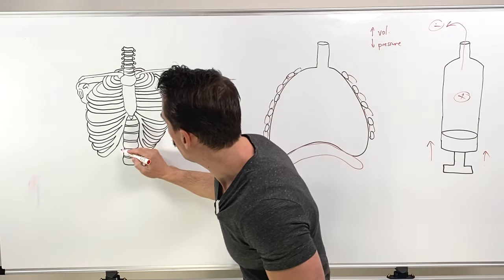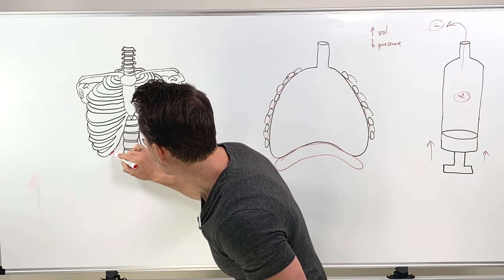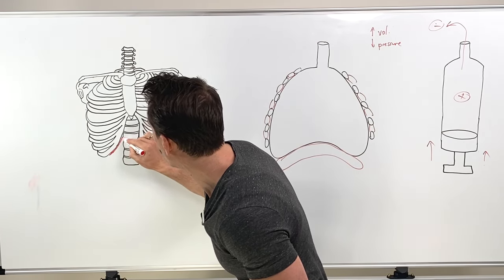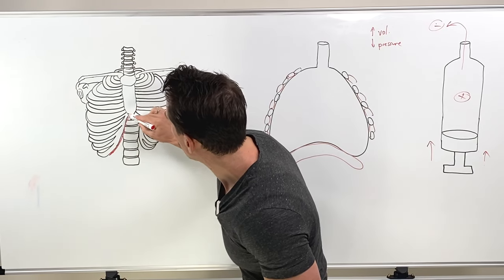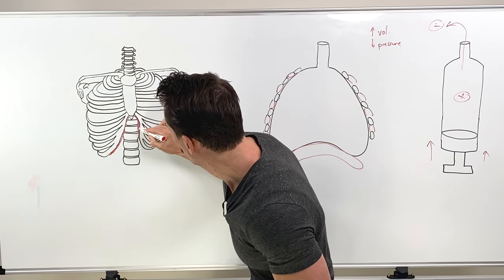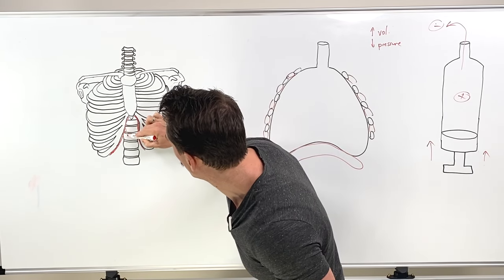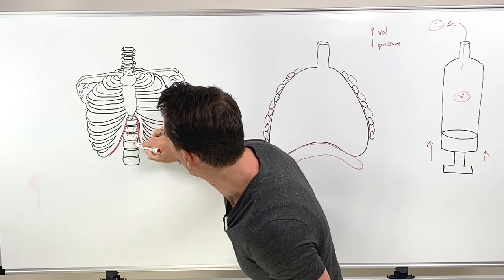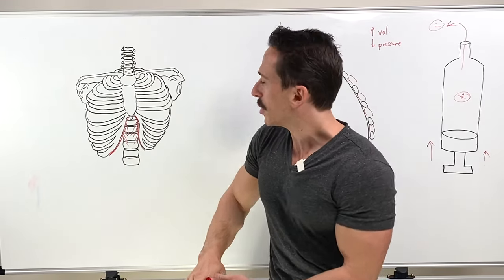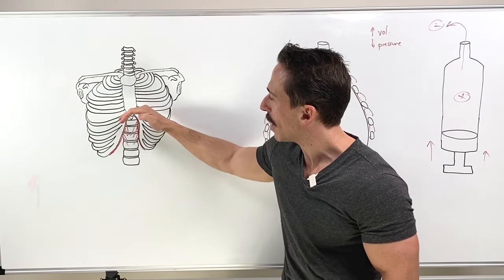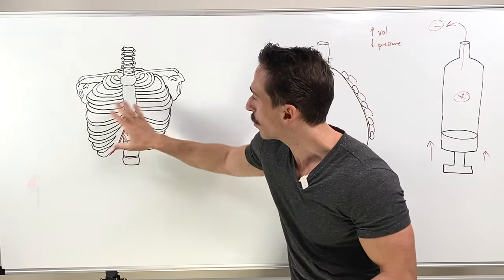So the diaphragm is actually sitting under here and it's attached to the ribs, attached to the sternum, and it actually has attachments to the lumbar vertebrae.